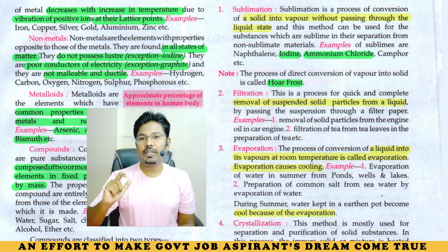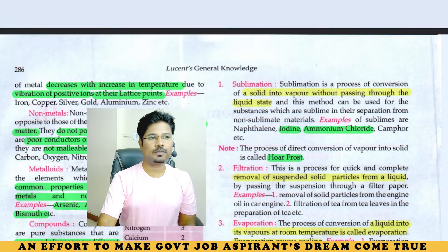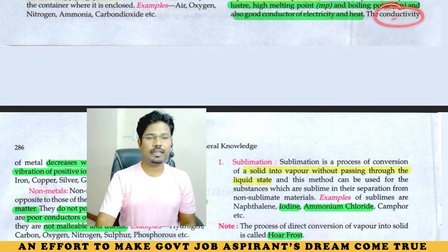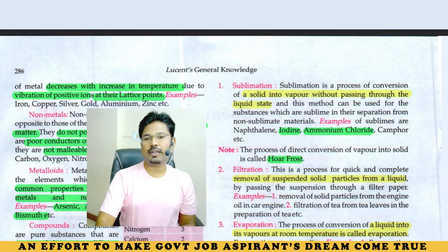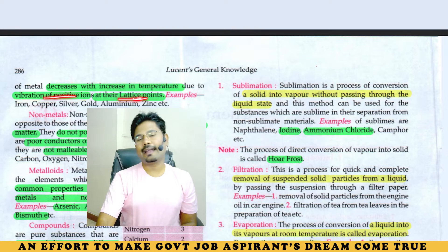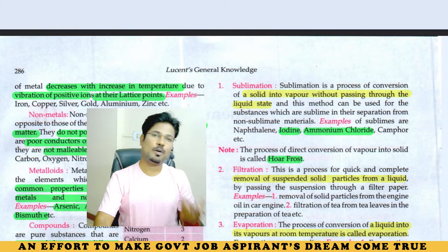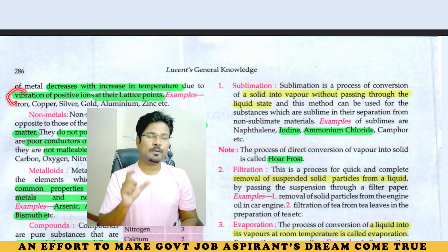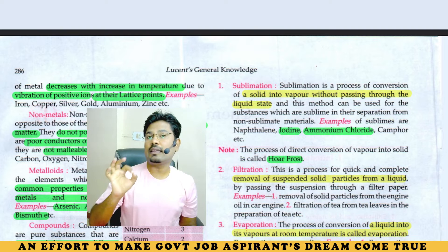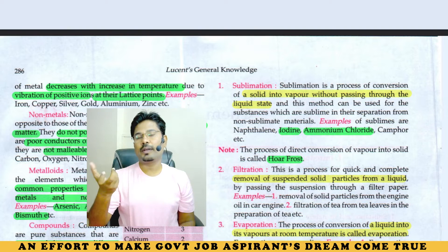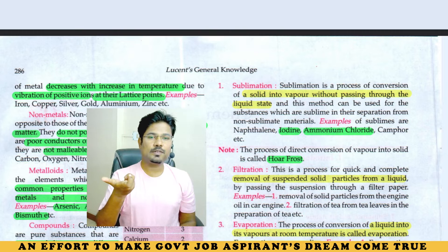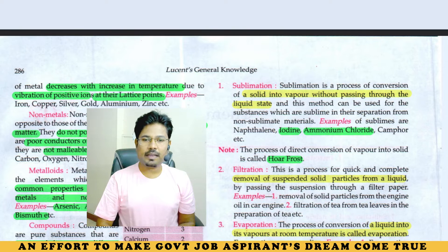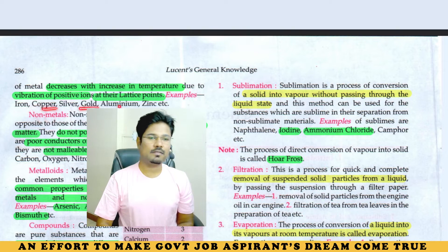The conductivity of metals decreases with increase in temperature. This is due to vibration of positive ions at their lattice points. Examples of metals are iron, copper, silver, and gold.